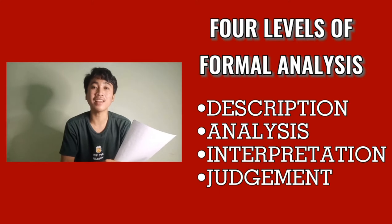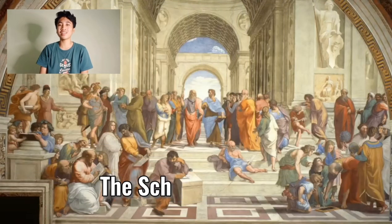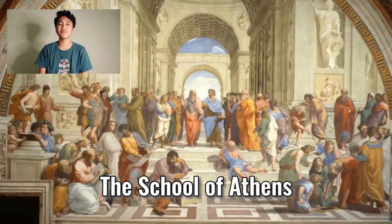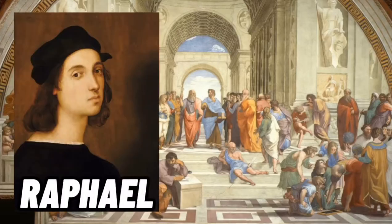So let's begin analyzing the art. This is the School of Athens by Raphael. The School of Athens is a painting made by one of the great High Renaissance painters of Urbino, known as Raphael.